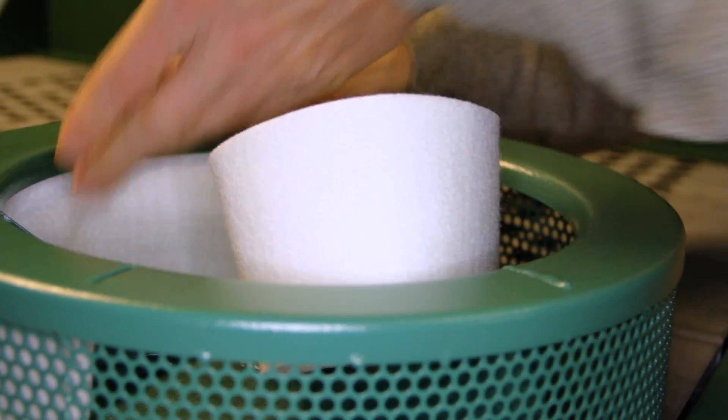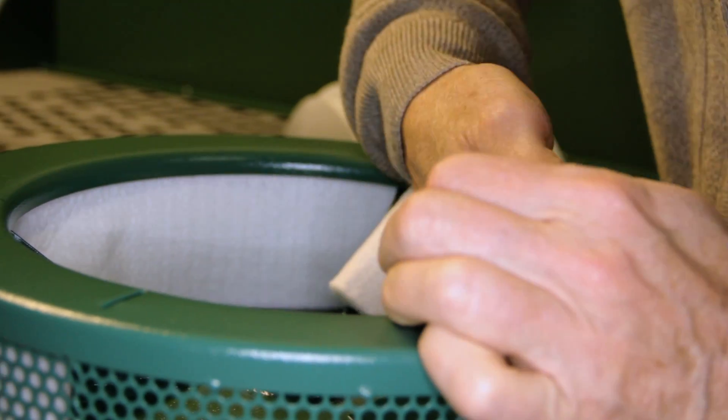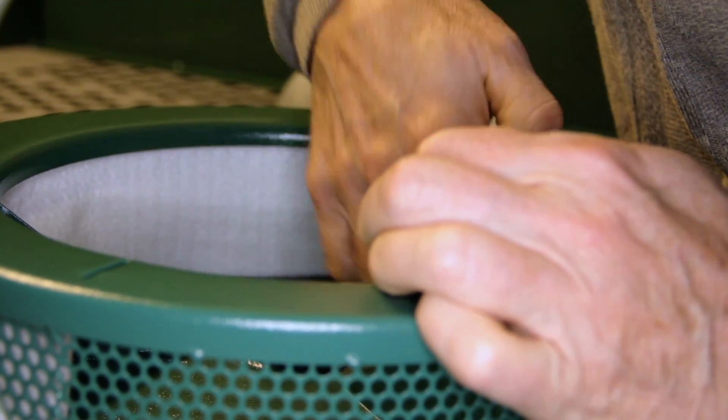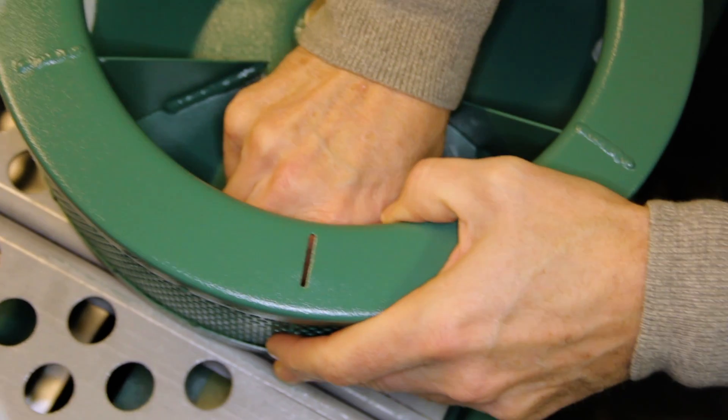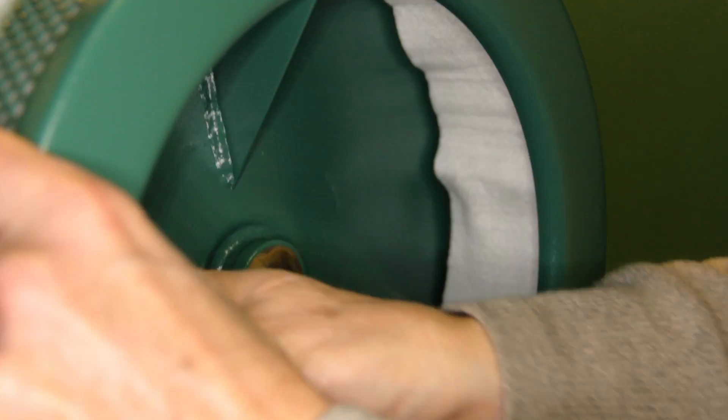The primary filter goes behind the back edge of the fan blades inside the drum. Push the edges to have it stop at the slot. Do the same thing for the other half of the primary filter. Smooth out the filter and make sure the edges align to the slot opening. This is very important.